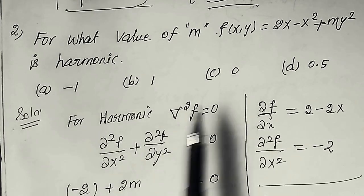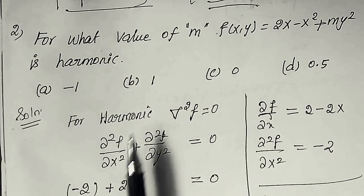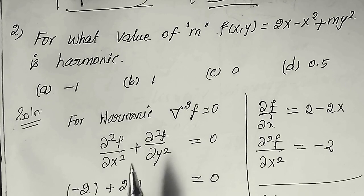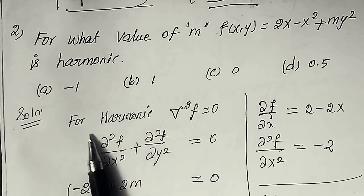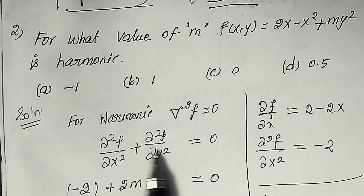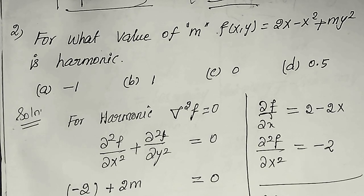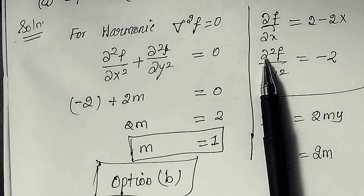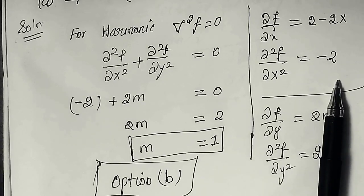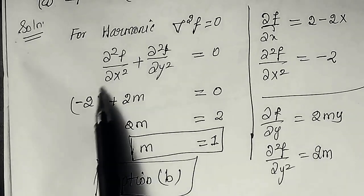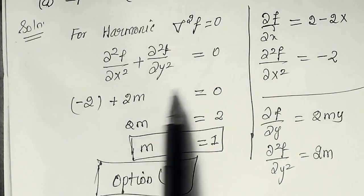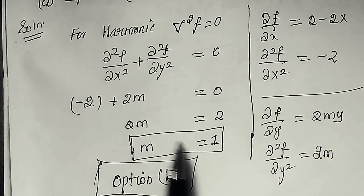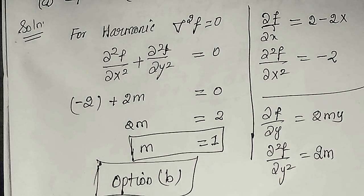This is the final step. The given function satisfies ∂²f/∂x² + ∂²f/∂y² = 0. We calculate the separate derivatives and apply them. Since the given function is harmonic, we calculate ∂f/∂x and ∂²f/∂x², then apply 10 + 2m = 0, so 2m = -10, giving m = 1. The answer is option B: the given function is harmonic when m = 1.